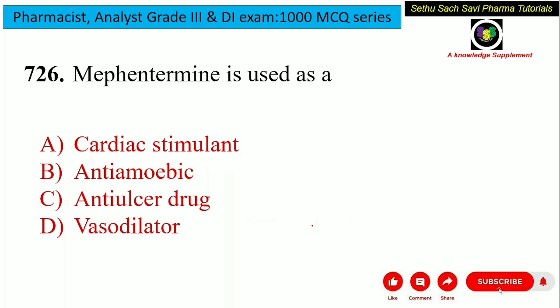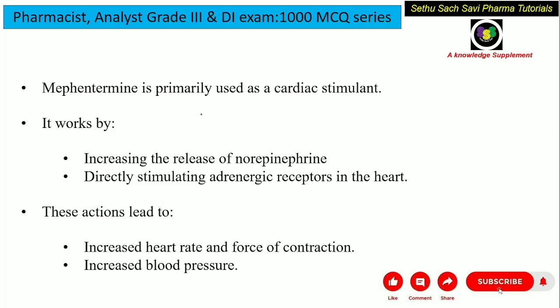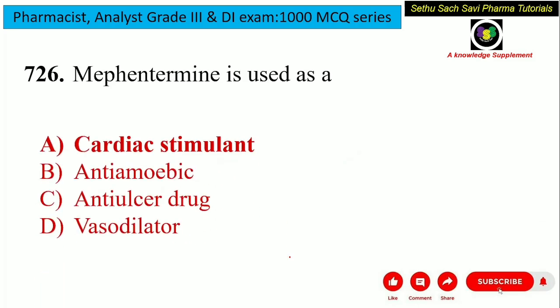Mephentermine is used as — is it a cardiac stimulant, anti-amoebic, anti-ulcerative, or vasodilator? Mephentermine is mainly used as a cardiac stimulant because it increases the release of norepinephrine, which directly stimulates the adrenergic receptors in the heart. These actions lead to increased heart rate, increased blood pressure, as well as increased force of contraction. So it can be used as a cardiac stimulant.